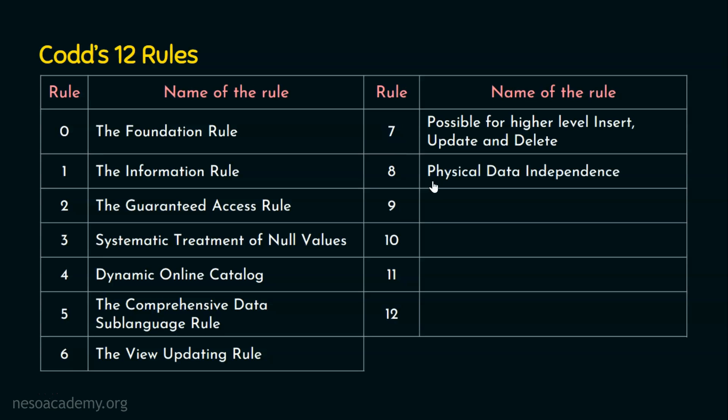Rule number 8 is physical data independence. Any application program or terminal activities should remain logically unimpaired whenever there are changes made in the storage or access method. In a three-tier architecture, changes made in the low-level storage representations or access methods should not impact the application programs or terminal activities.